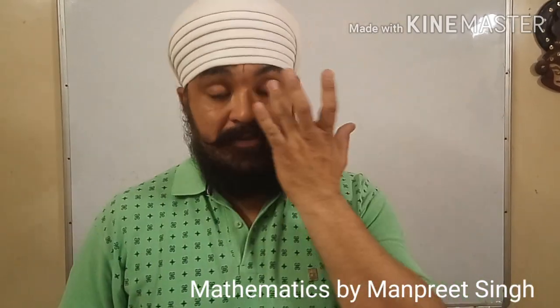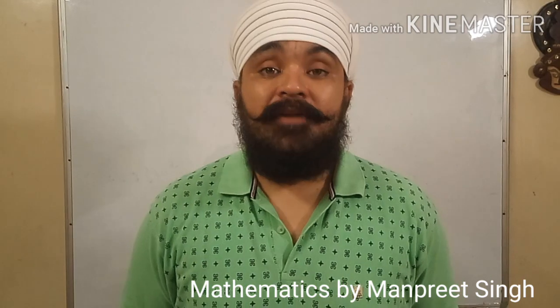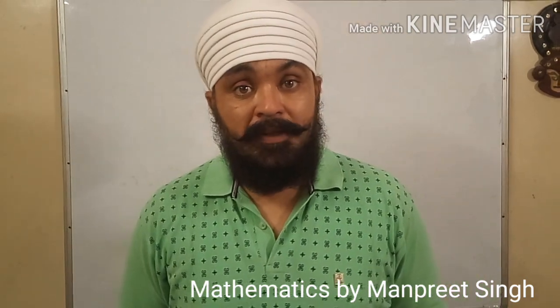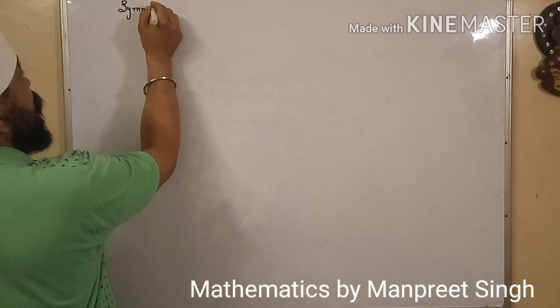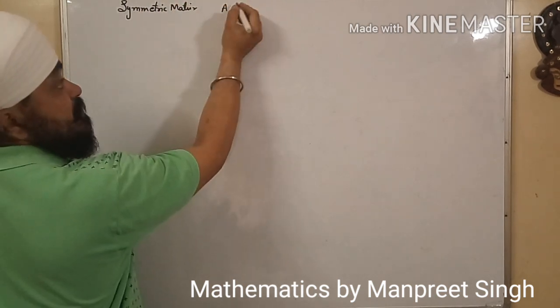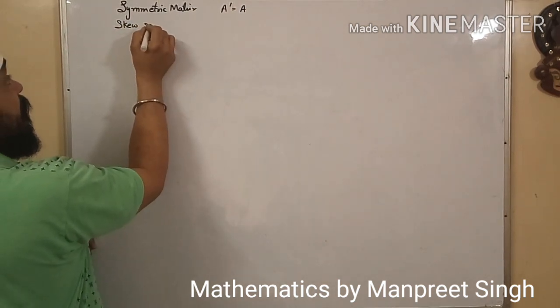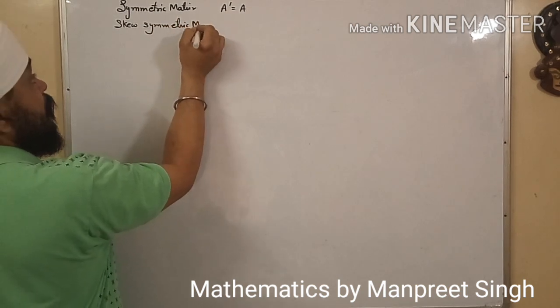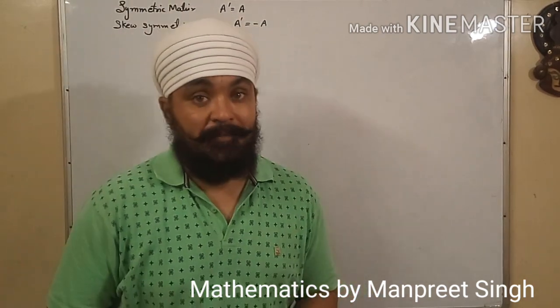Hello students, today in this lecture we are going to take a topic from class 12 — matrices. In the last lecture we covered symmetric and skew symmetric matrices. Now in this lecture we will take properties of symmetric and skew symmetric matrices along with a few theorems. A symmetric matrix means the transpose of the matrix equals the same matrix A. A skew symmetric matrix means the transpose of the matrix is minus A.